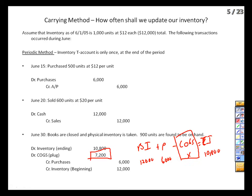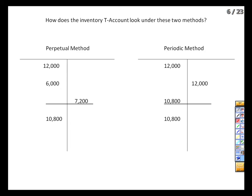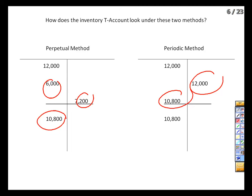Both the perpetual and periodic methods yield the same ending inventory — by design, because we went out and counted it. Under the perpetual method, the T-account fills up with individual purchase and sale entries. Under the periodic method, it never gets more complicated than that single year-end entry. If you think about all those purchases and sales during the year, the perpetual T-account fills up with numbers quickly, while the periodic method stays simple.